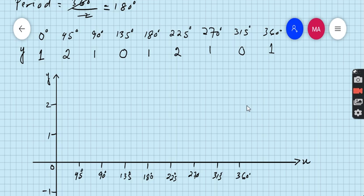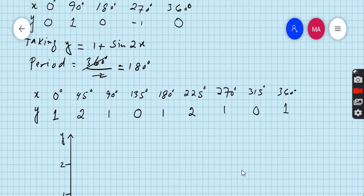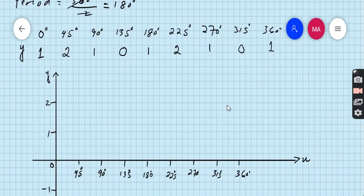First I am making the graph of y equals sin x. Sin 0 is 0, sin 90 is 1, sin 180 is 0.